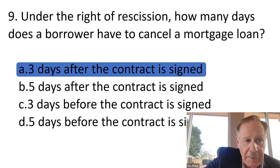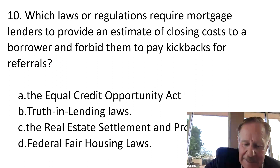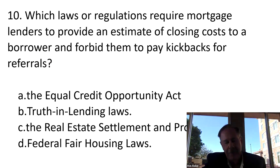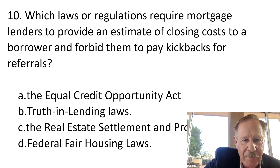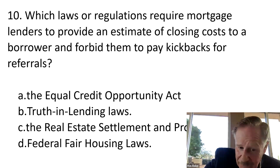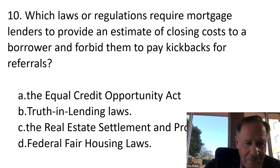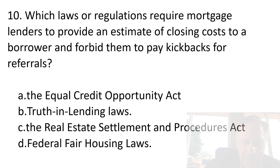Question ten: Which law or regulation requires mortgage lenders to provide an estimate of closing costs to borrowers and forbids paying kickbacks for referrals? Options are the Equal Credit Opportunity Act, Truth in Lending, the Real Estate Settlement Procedures Act, or federal fair housing laws. The Equal Credit Opportunity Act requires fairness in granting credit; Truth in Lending ensures borrowers know what they're getting into; federal fair housing is about anti-discrimination. The correct answer is C: the Real Estate Settlement Procedures Act.